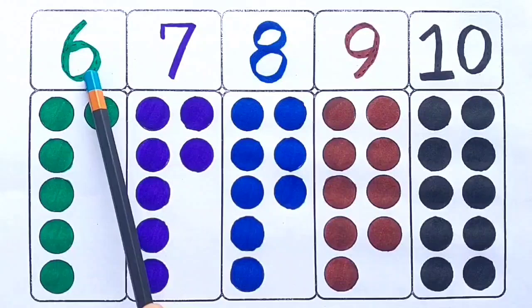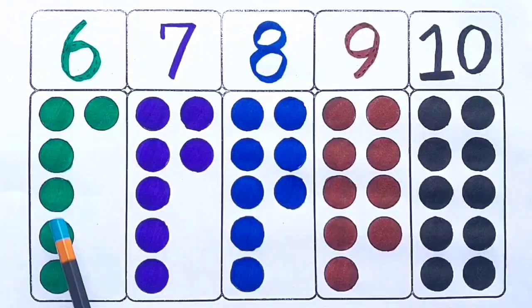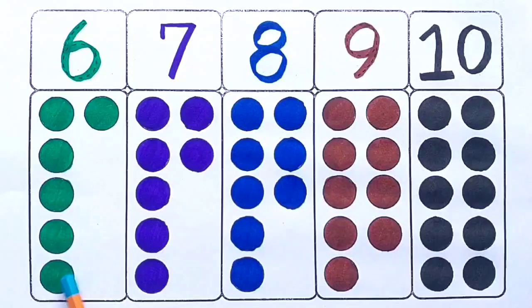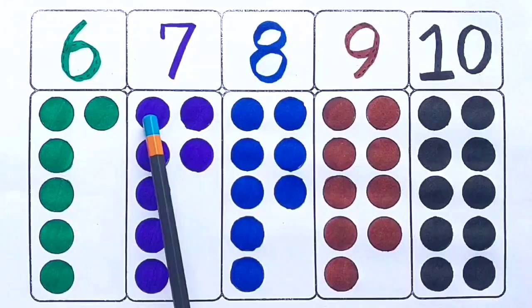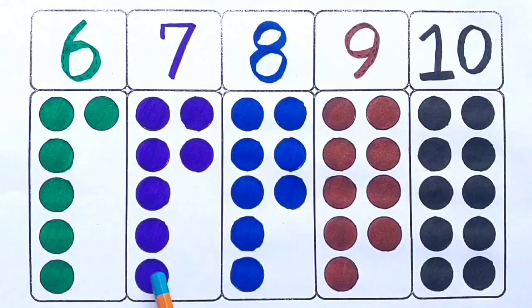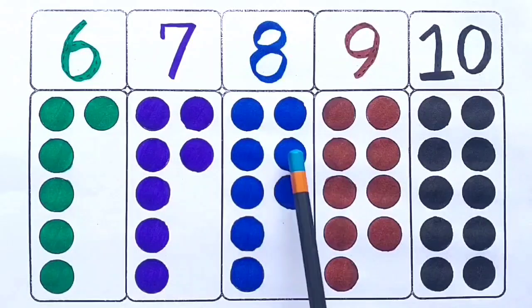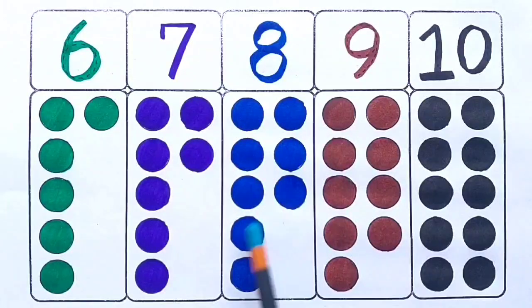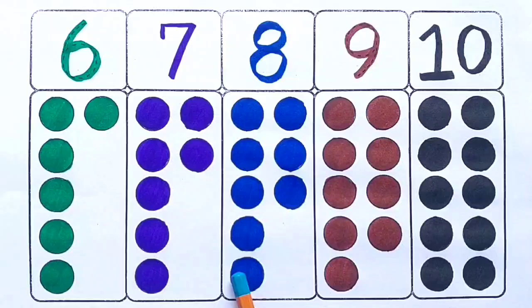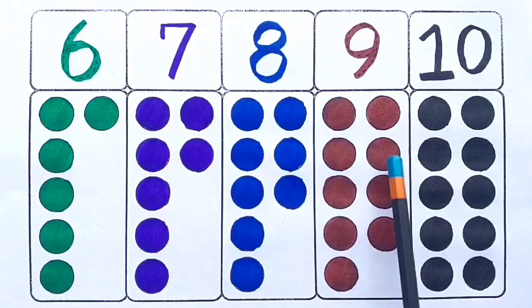Six, one two three four five six. Seven, one two three four five six seven. Eight, one two three four five six seven eight. Nine, one two three four five six seven eight nine.